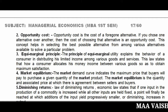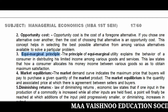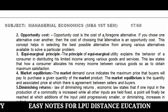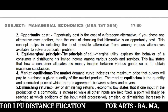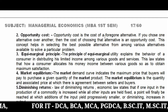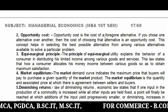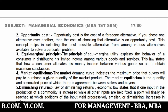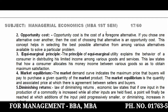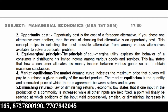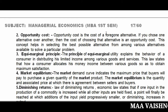The third point is the Equimarginal Principle. Through this principle, we find out what a consumer's behavior is in terms of their limited income — how they spend it on different goods and services so that the last unit spent on each good and service gives maximum satisfaction. Basically, equimarginal utility helps us judge consumer behavior and how they divide their limited income across various goods and services.